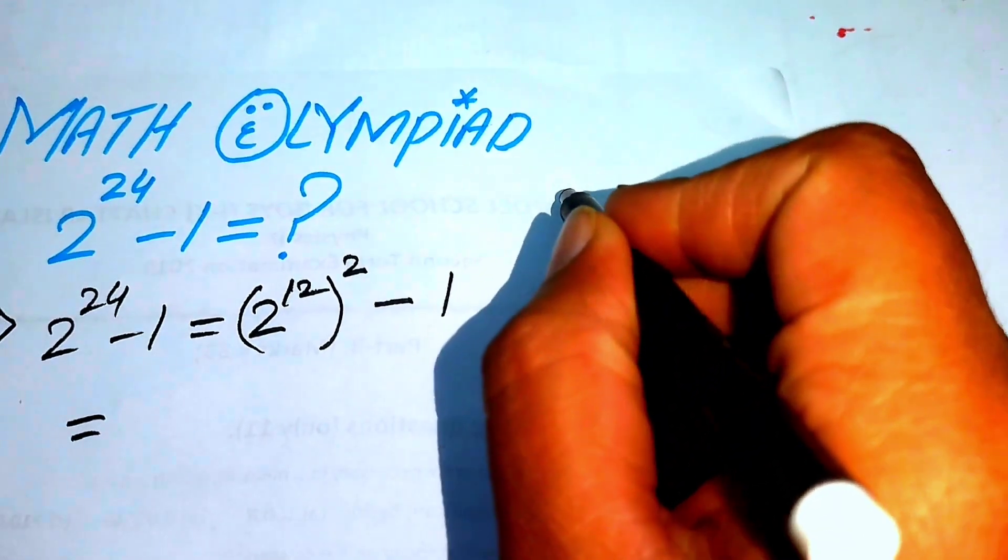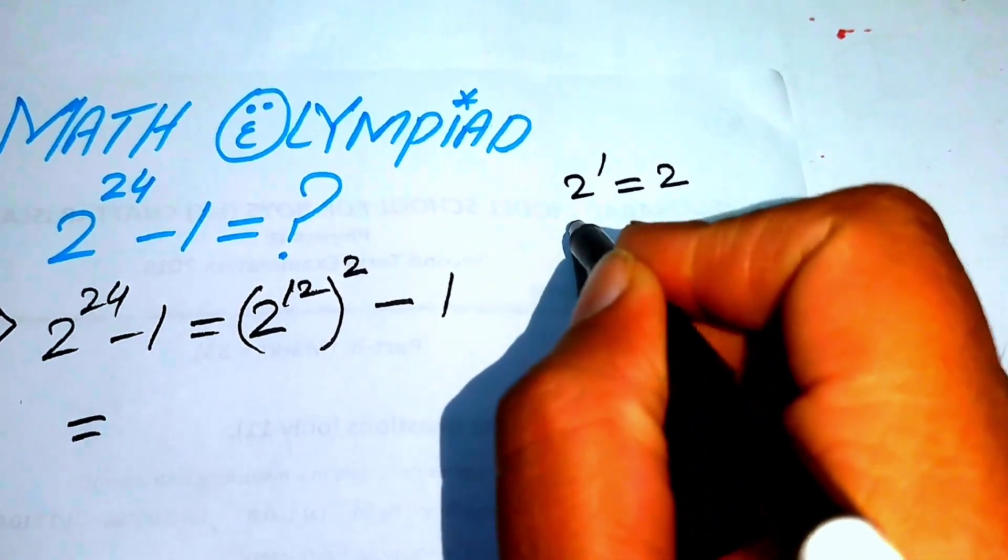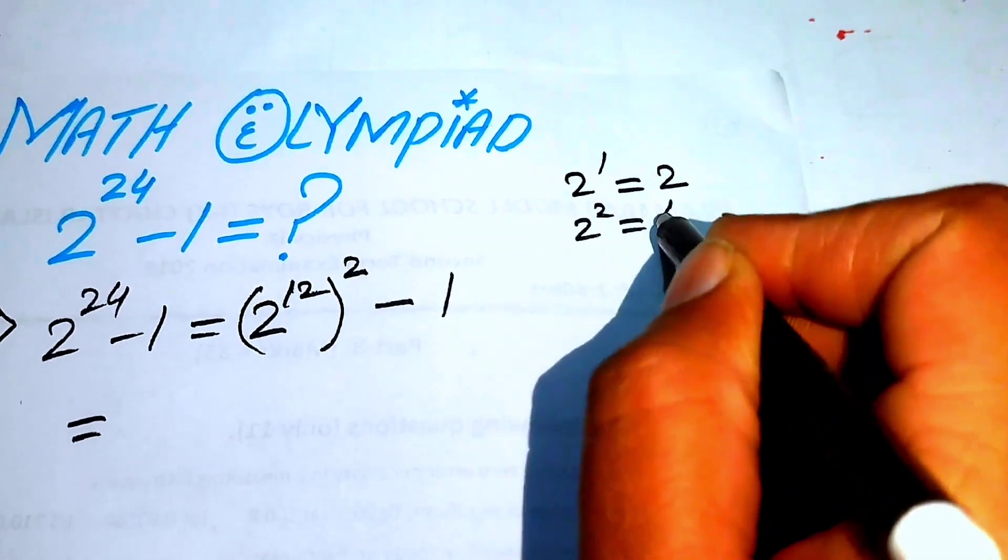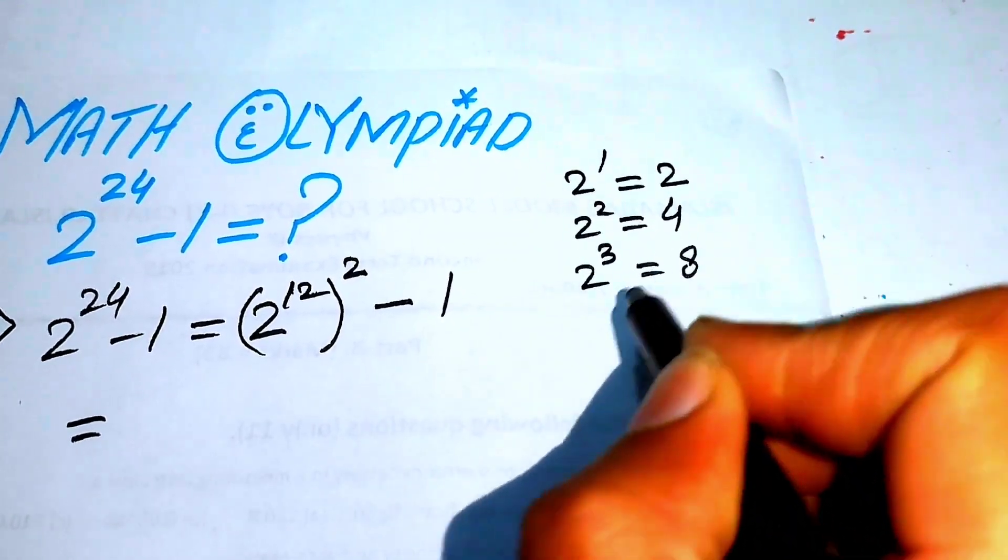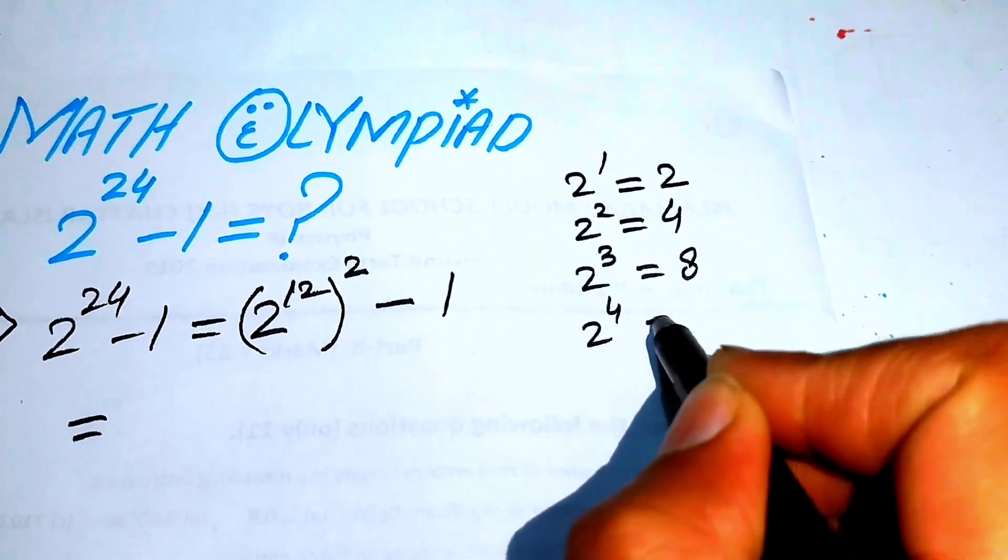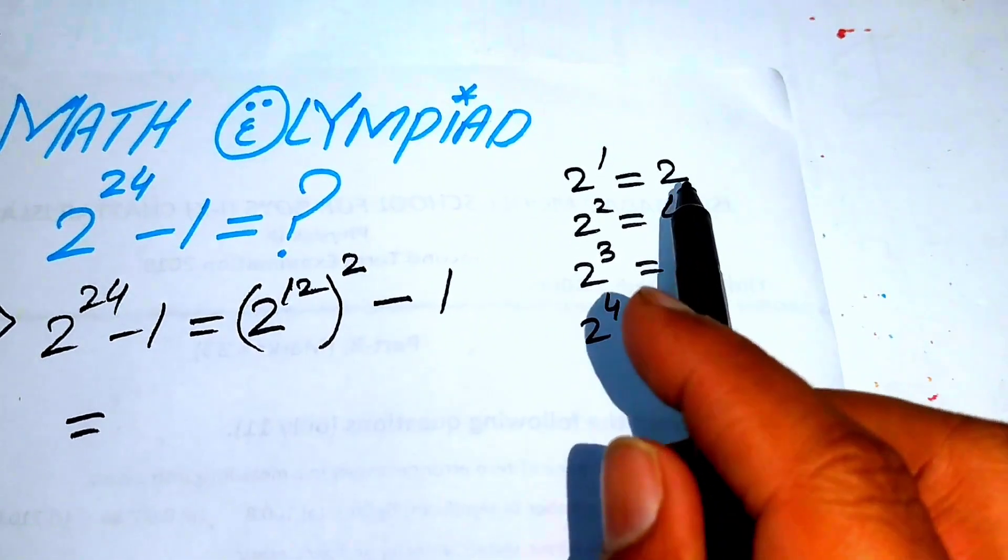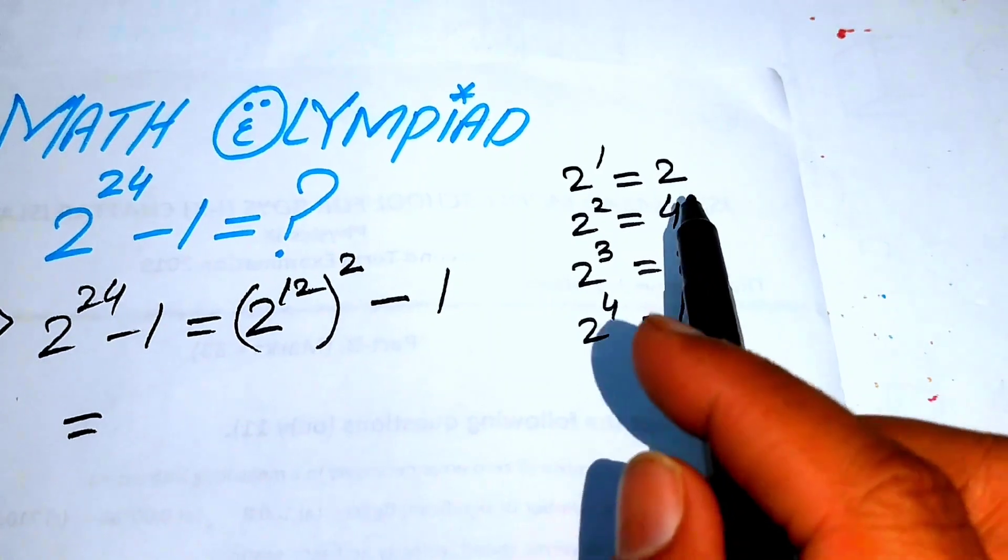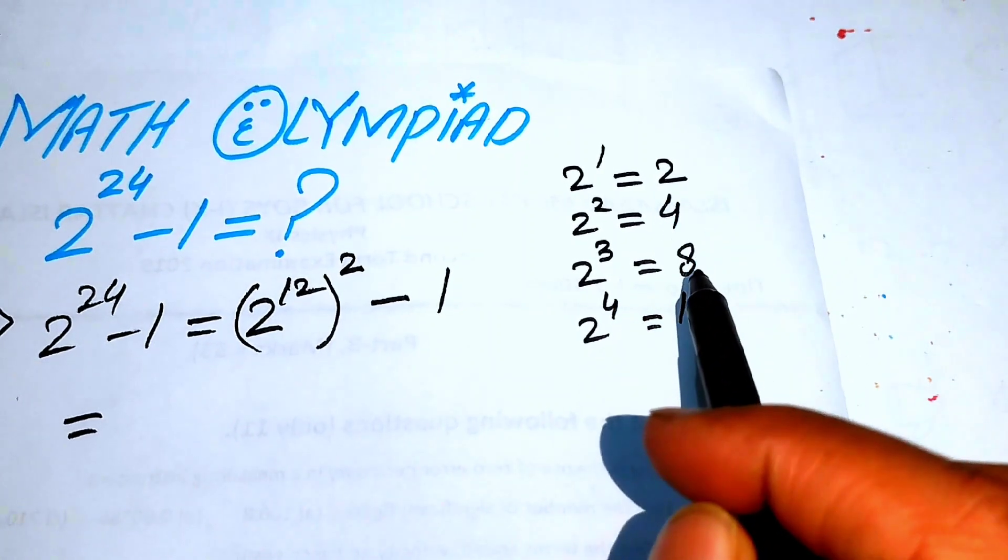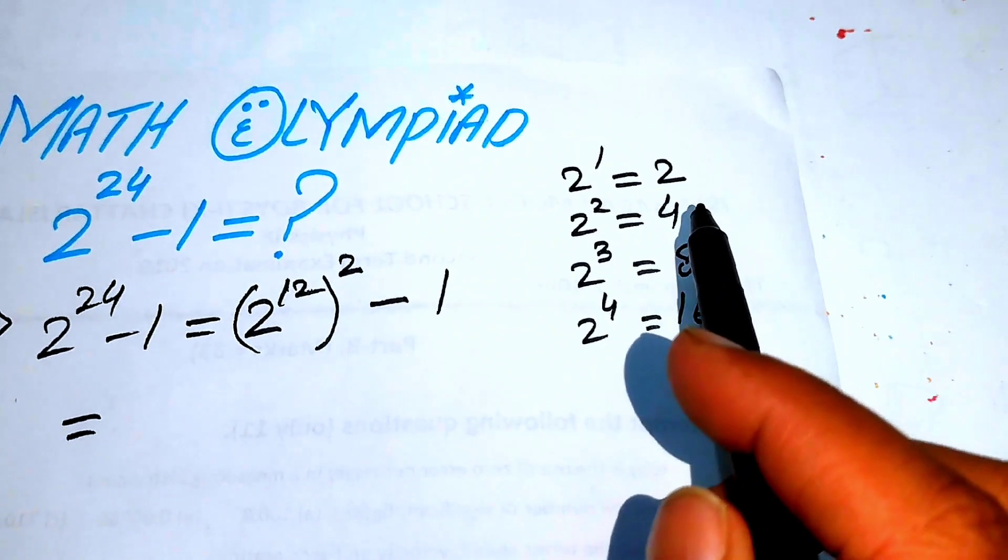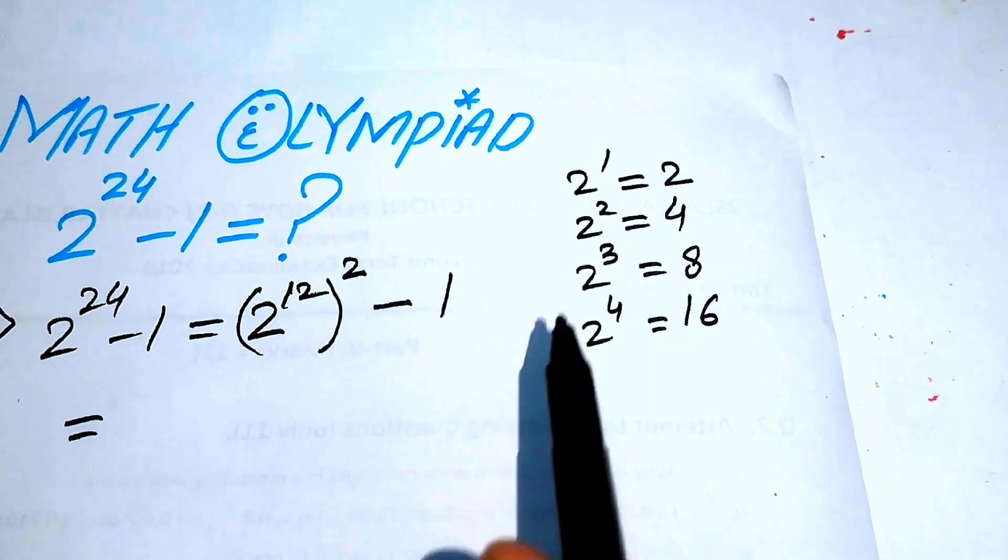You know that 2 to the power of 1 equals 2, 2 to the power of 2 equals 4, 2 to the power of 3 equals 8, 2 to the power of 4 equals 16. Here you just focus on the right-hand side and you see that the first value is 2, then 4, then 8, which means you just multiply each previous term by 2.